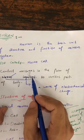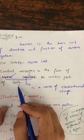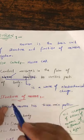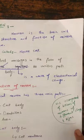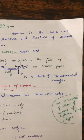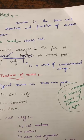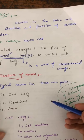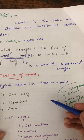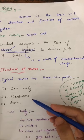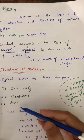A nerve impulse is a way of electrochemical change. It causes a nerve impulse and creates electrochemical change. The structure of a neuron is divided into three main parts: the first one is known as the cell body, the second one is the dendrites, and the last one is known as the axon.